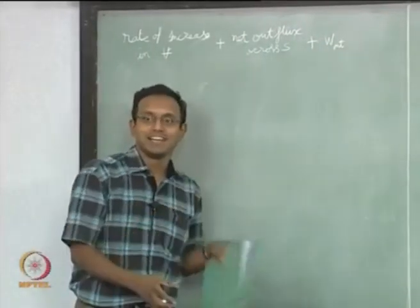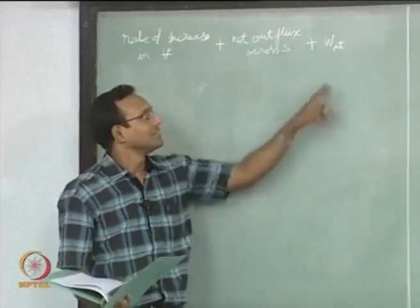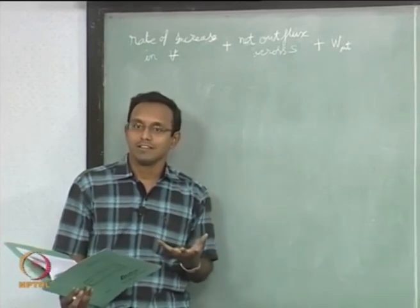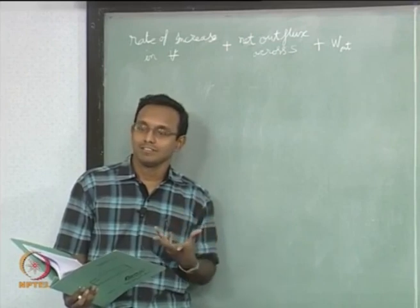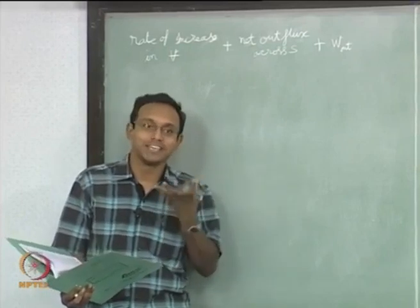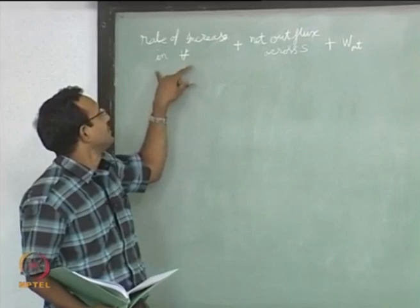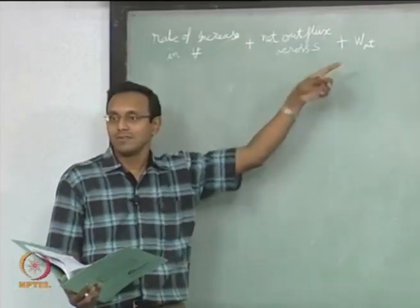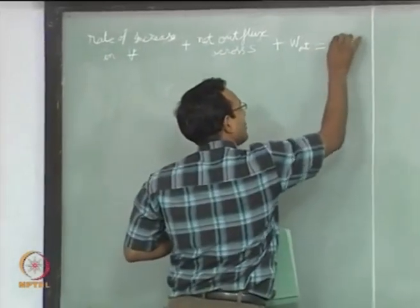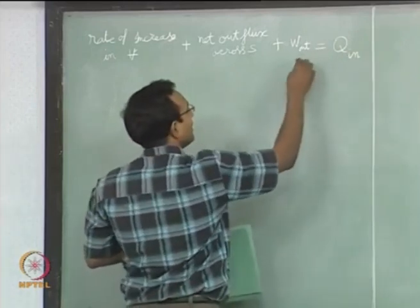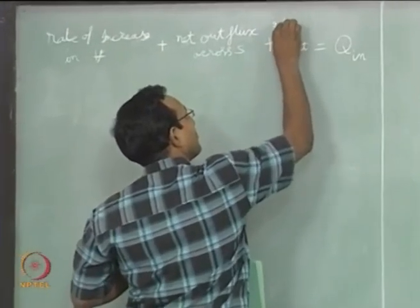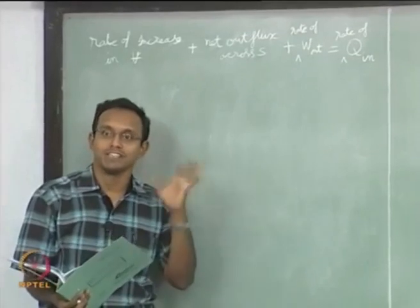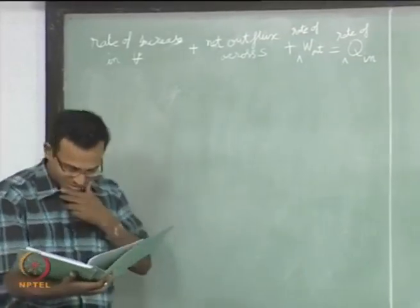Now what is the input? The heat transfer in — that is the only thing, or some other source term that is producing energy inside. All these are just the rate of increase of energy inside the volume. What increased it? That is your net influx. We are thinking about time rate of change of quantities — in this case it is the energy equation, so the quantity is energy.